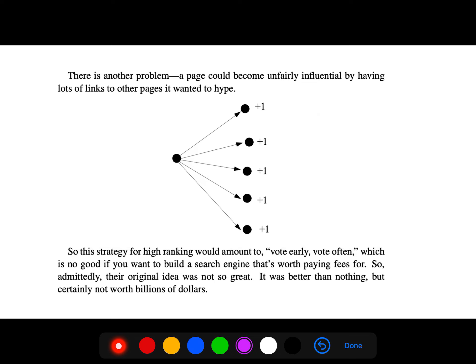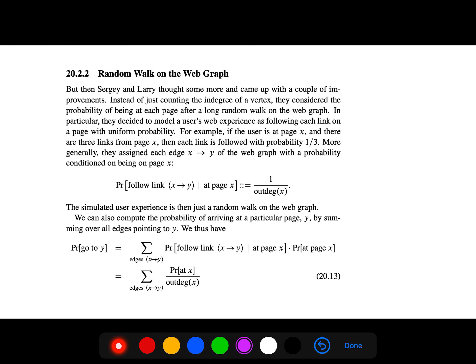People can cheat. Another way is to become unfairly influential by having lots of links to other pages, so this also doesn't work. But this one is interesting: if the user is at page x and there are three links from page x, then each link is followed with probability one-third. They assign each edge with a probability, but the probability of going to y depends on the probability of staying at page x and going to y. There are many ways to go to y.